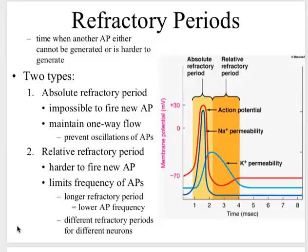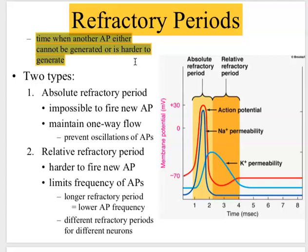Something else to discuss is the refractory period — this is the time when another action potential either cannot be generated or is harder to generate. It's the time in between action potentials; we cannot constantly be having action potentials, so there needs to be some space between them.